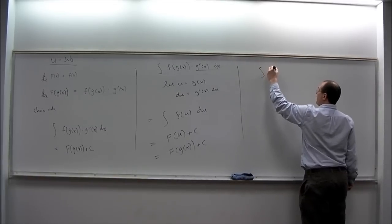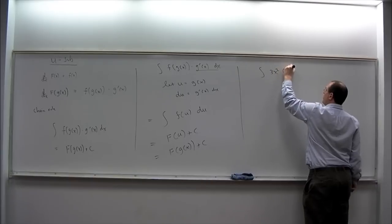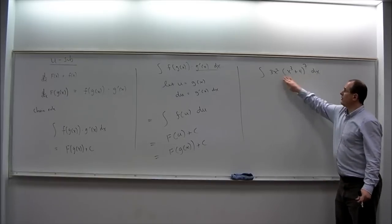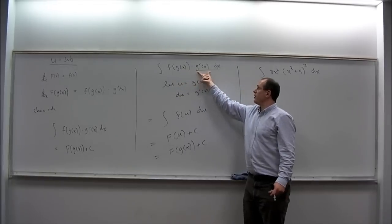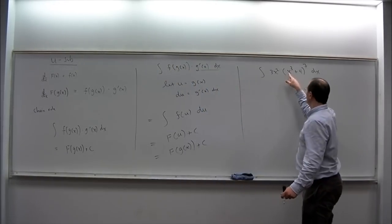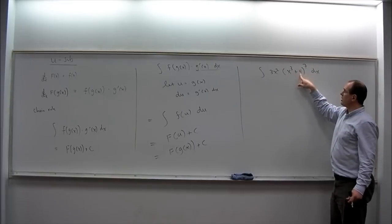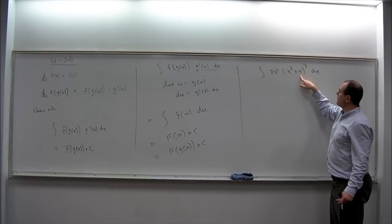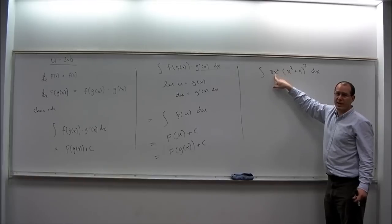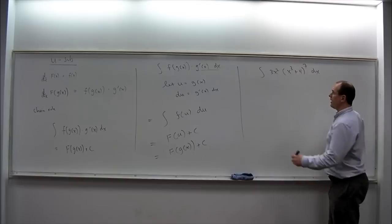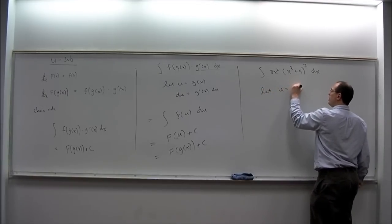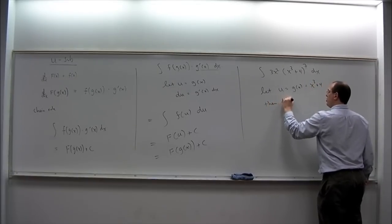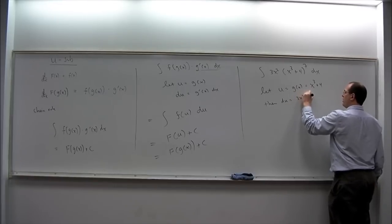Suppose we have the integral of 3x squared times (x cubed plus 4) to the 7th power. If you look at this structure, it is exactly the same as the general form, except G prime is written on the left side of the composition. The inside is x cubed plus 4, the outside function is the 7th power function, and the derivative of the inside is 3x squared — that's our G prime of x. So the process says let U equal G of x, which is x cubed plus 4, then DU is G prime, which is 3x squared dx.